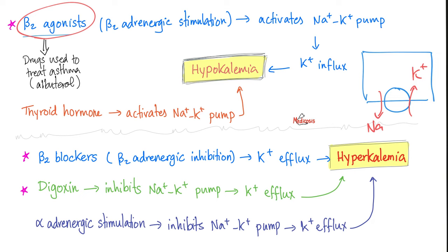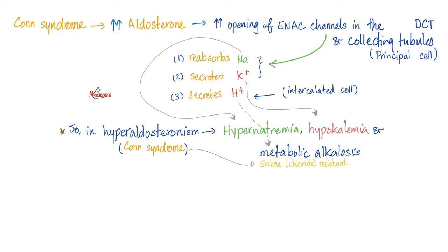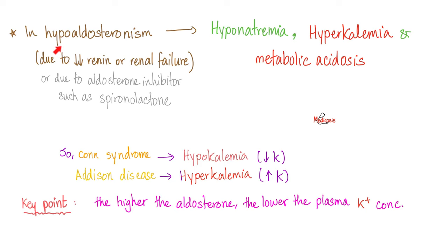Next, Conn's syndrome — primary hyperaldosteronism. When aldosterone is high, it reabsorbs salt and water but secretes potassium and hydrogen. Therefore, in Conn's syndrome, you excrete too much hydrogen leading to metabolic alkalosis, and too much potassium leading to hypokalemia. Whether hypernatremia happens depends on the aldosterone escape phenomenon. If aldosterone is low, you get the opposite — hyperkalemia. When aldosterone is high, potassium is low; when aldosterone is low, potassium is high.